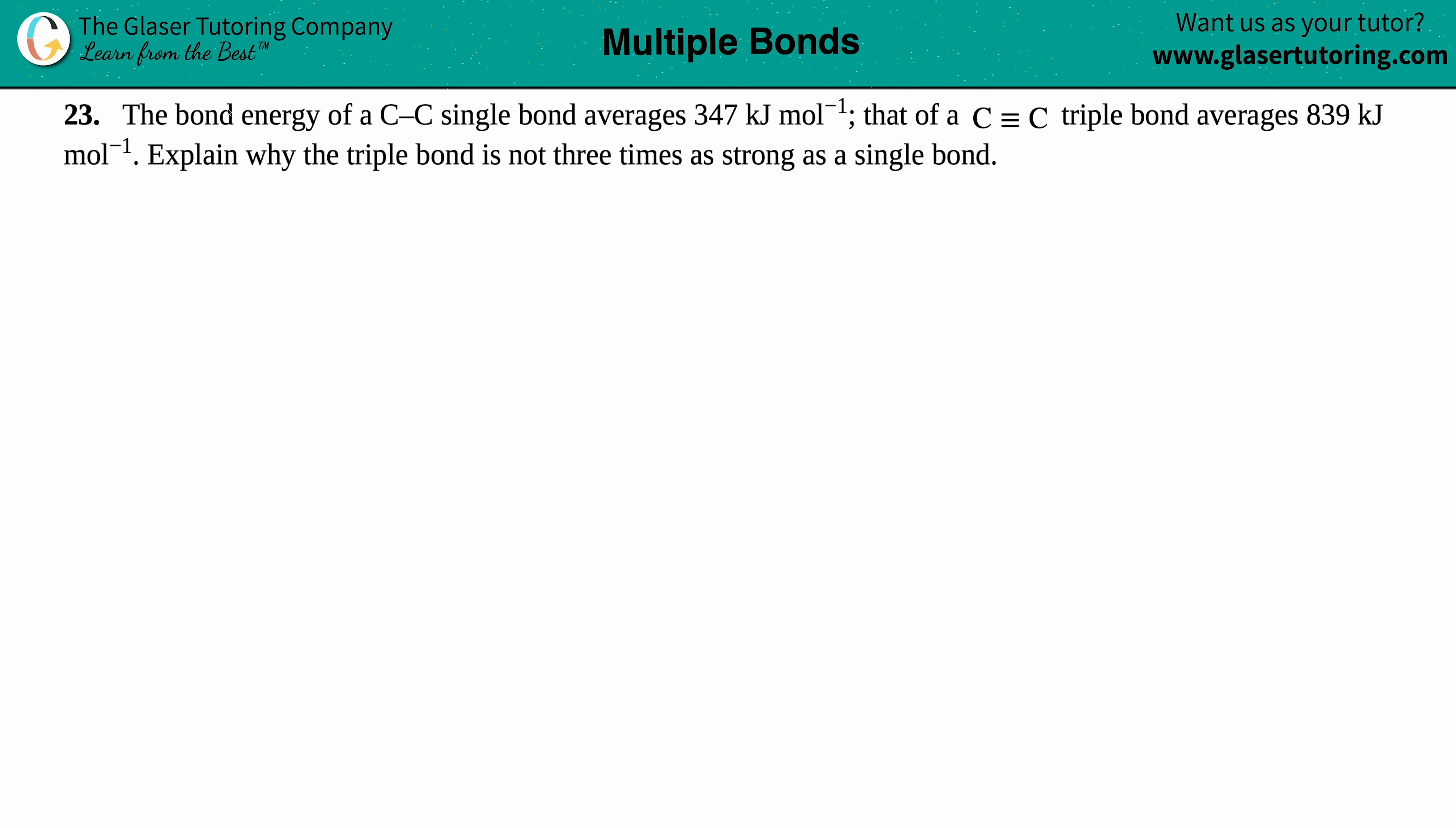Number 23. The bond energy of a C-C single bond averages about 347 kilojoules per mole, and that of a C≡C triple bond averages 839 kilojoules per mole. Explain why the triple bond is not three times as strong as the single bond.